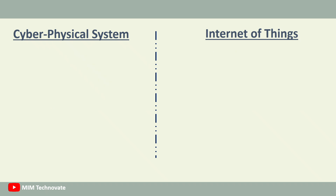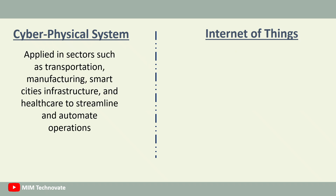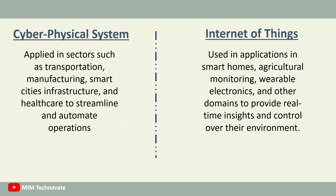Cyber-physical systems are commonly applied in sectors such as transportation, manufacturing, smart cities infrastructure, and healthcare to streamline and automate operations, while Internet of Things is used in applications in smart homes, agricultural monitoring, wearable electronics, and other domains to provide real-time insights and control over their environment.